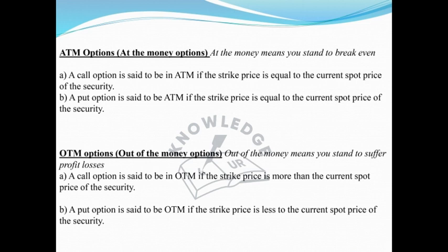OTM can be of two types: a call option and a put option. A call option is said to be OTM if the strike price is more than the current spot price of the security.